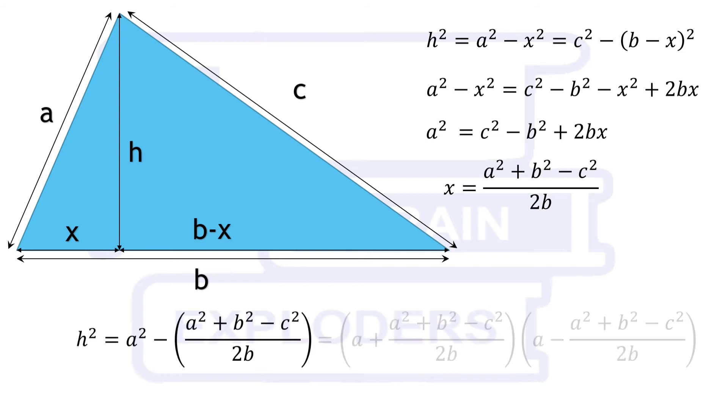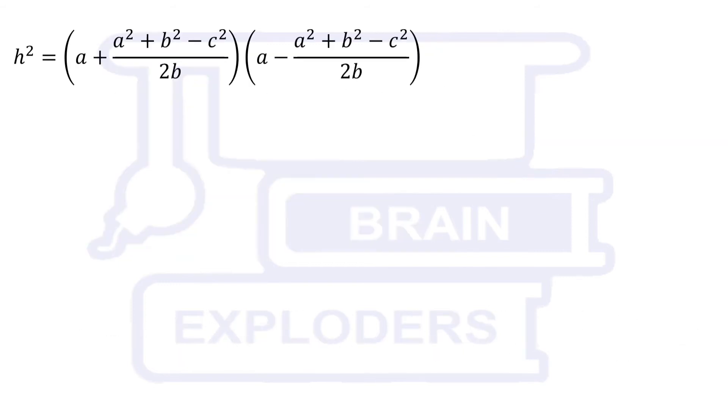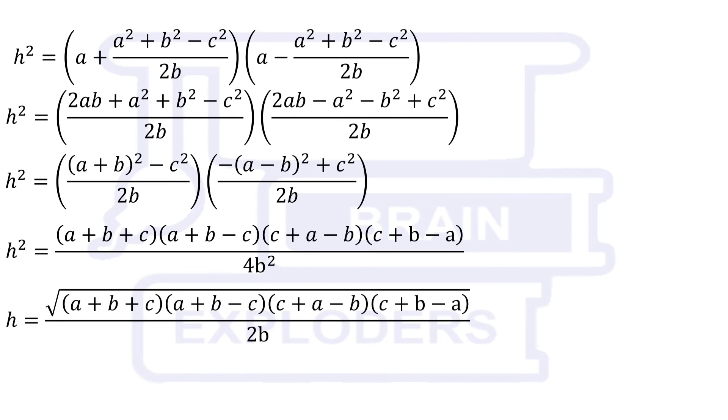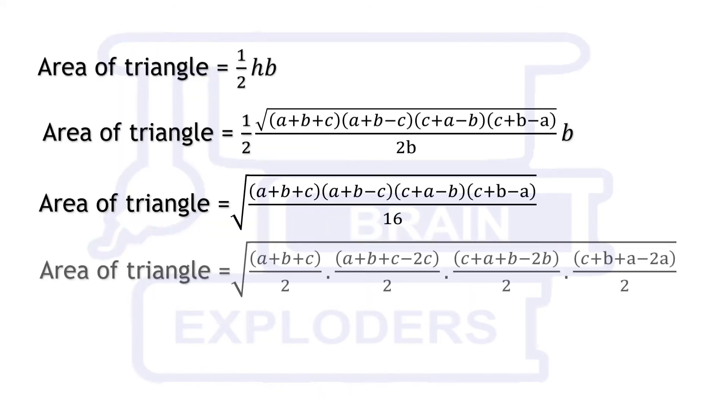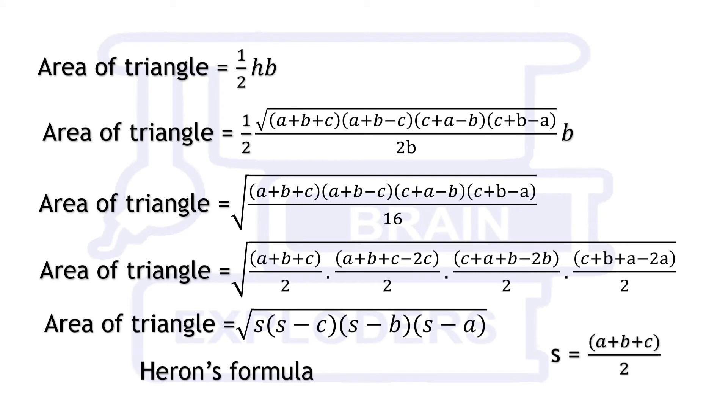With its help H can also be calculated. Now we have height as well as base. Put these values in the formula half base times height and after some simplifications we get the area of triangle in terms of A, B and C.